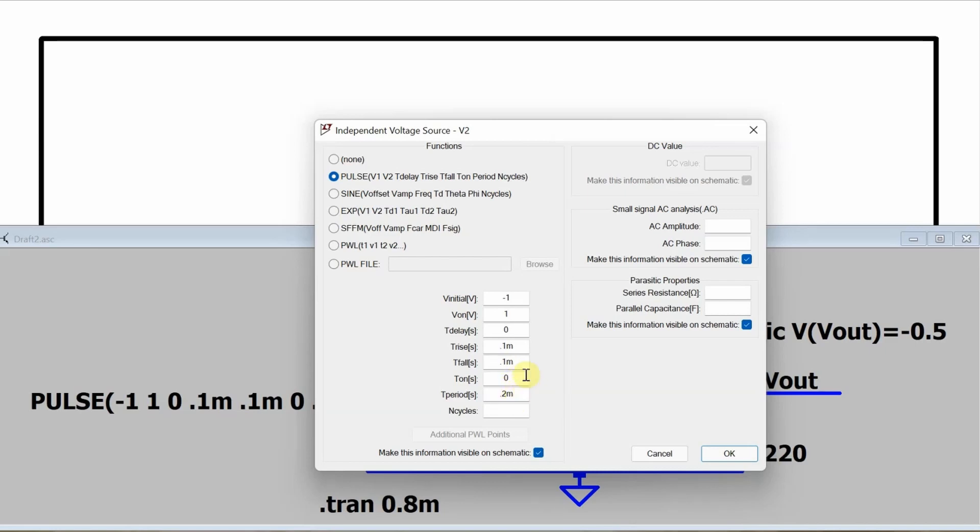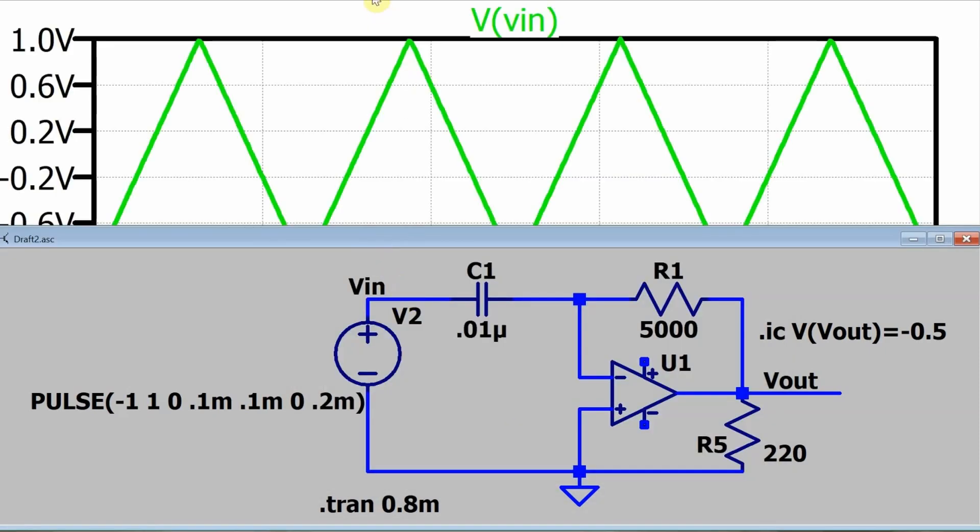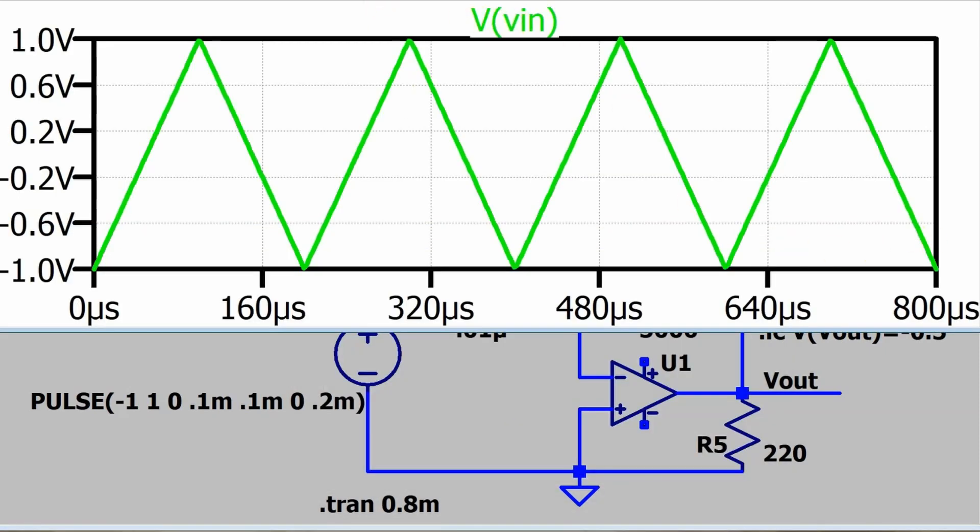So that means that this period of 0.2 milliseconds is made up of the time that it takes for it to get from the low value to the top value, and then from the top value to the low value. And that gives me a triangle wave. And you can see that triangle wave there.